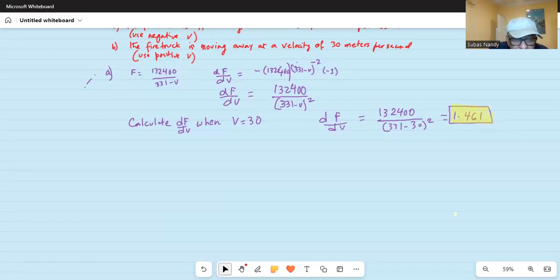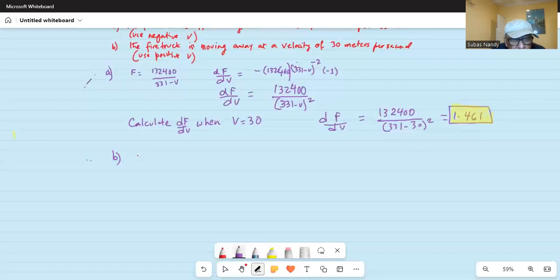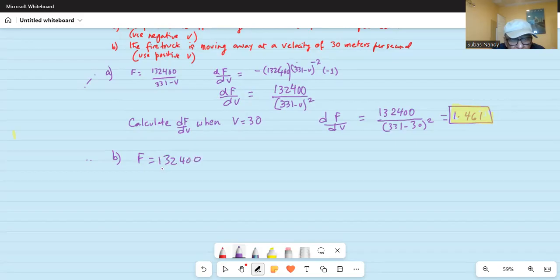Part B. Part B is F is equal to 132,400 divided by 331 plus v.